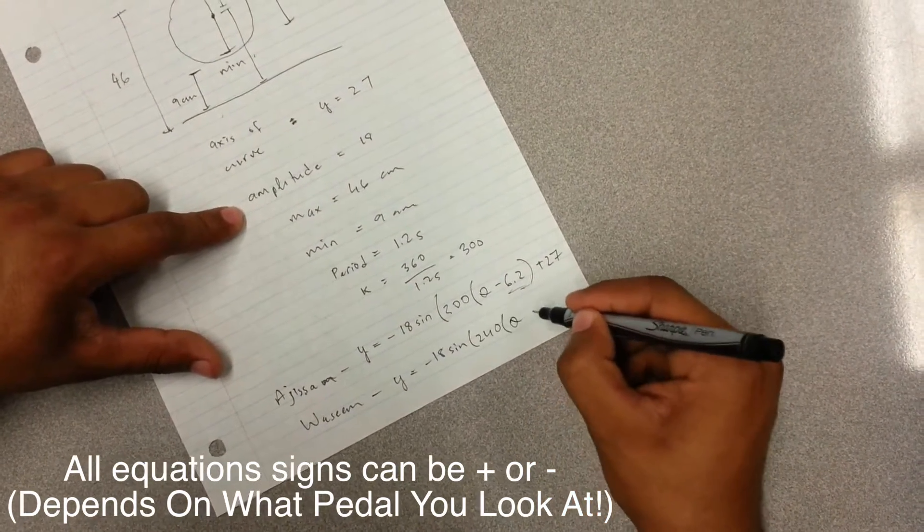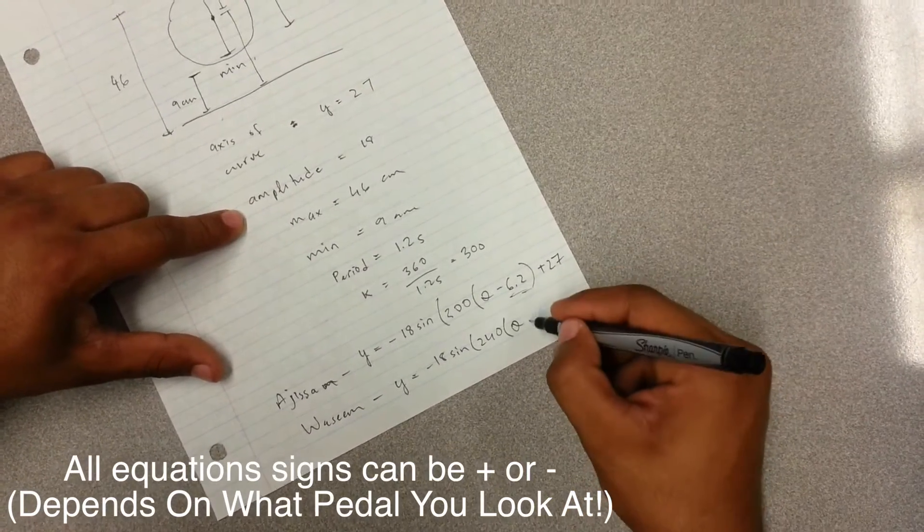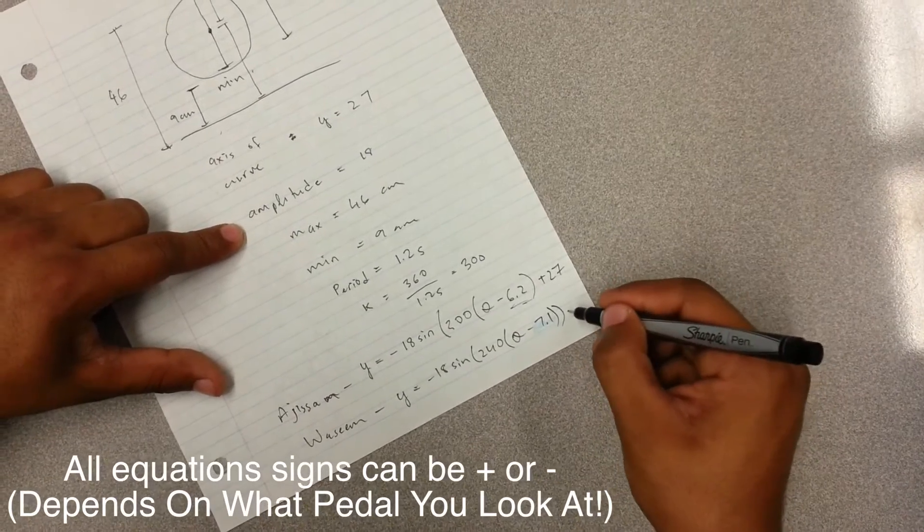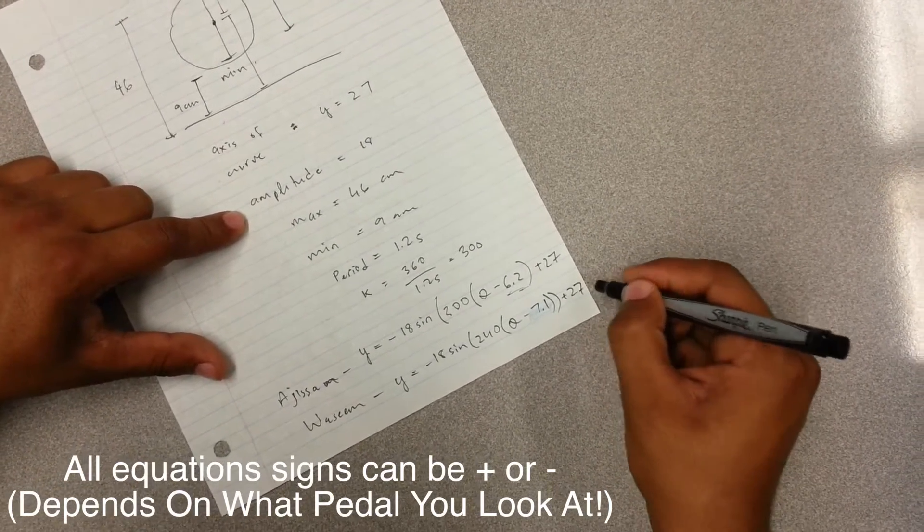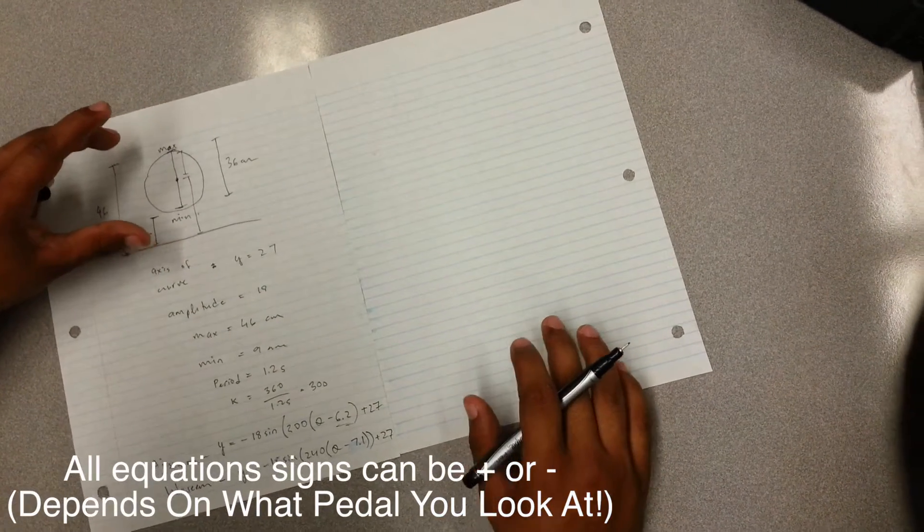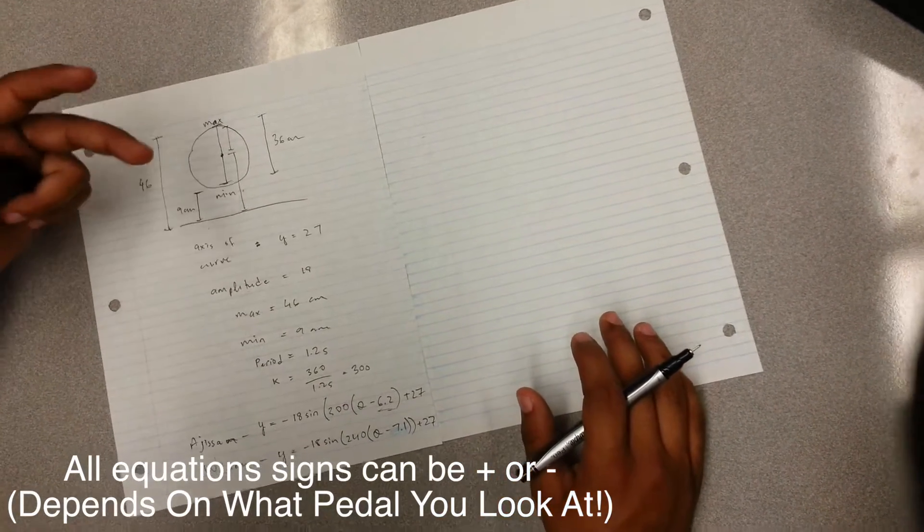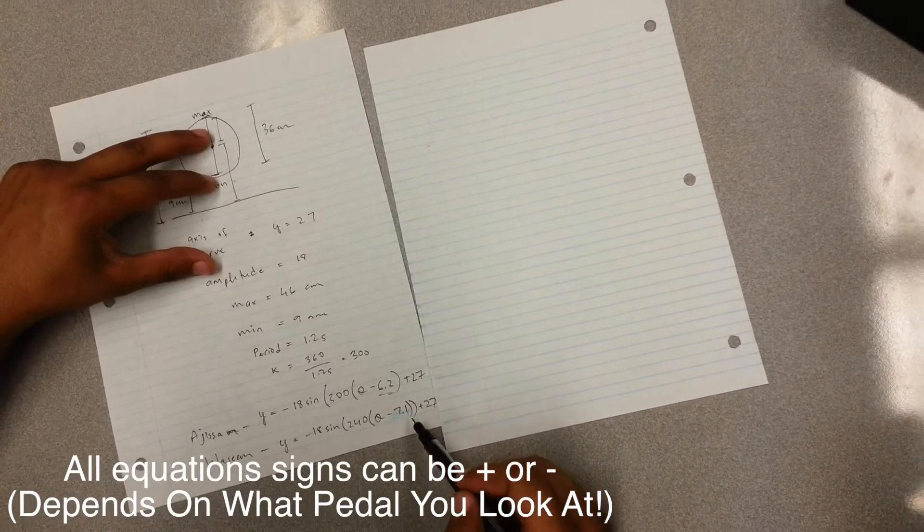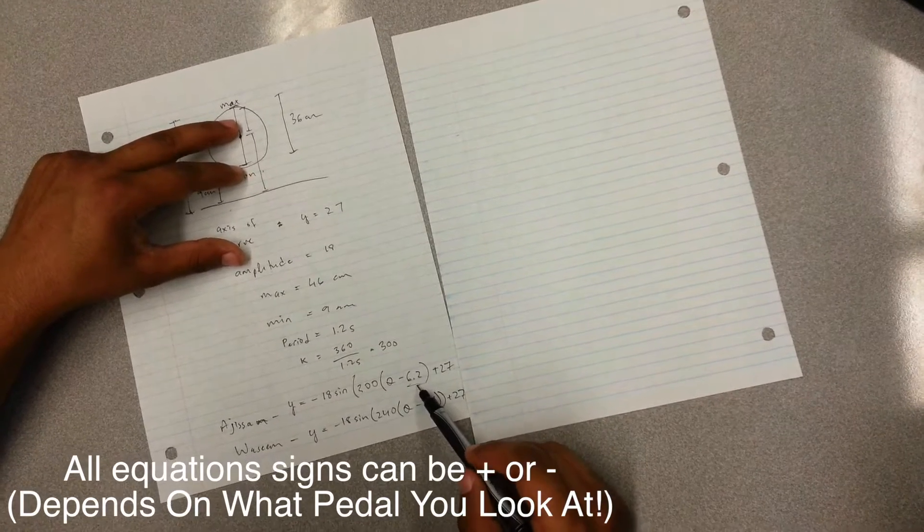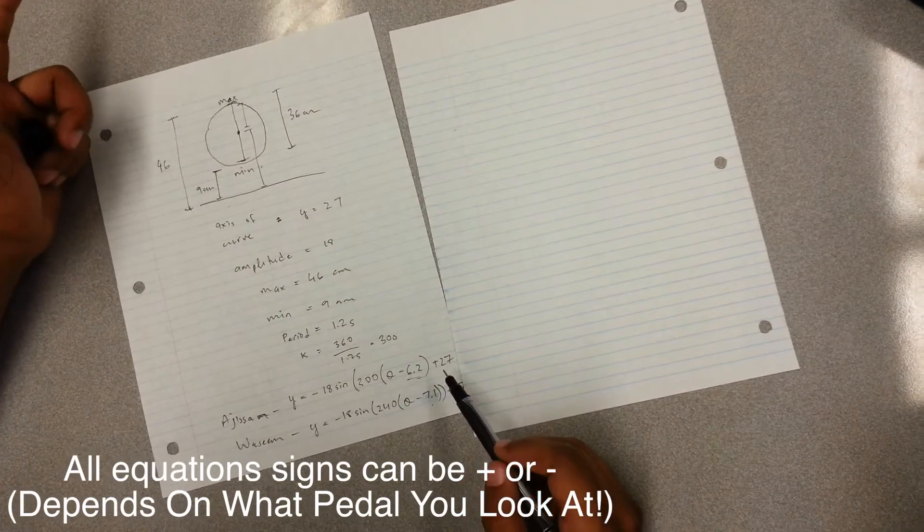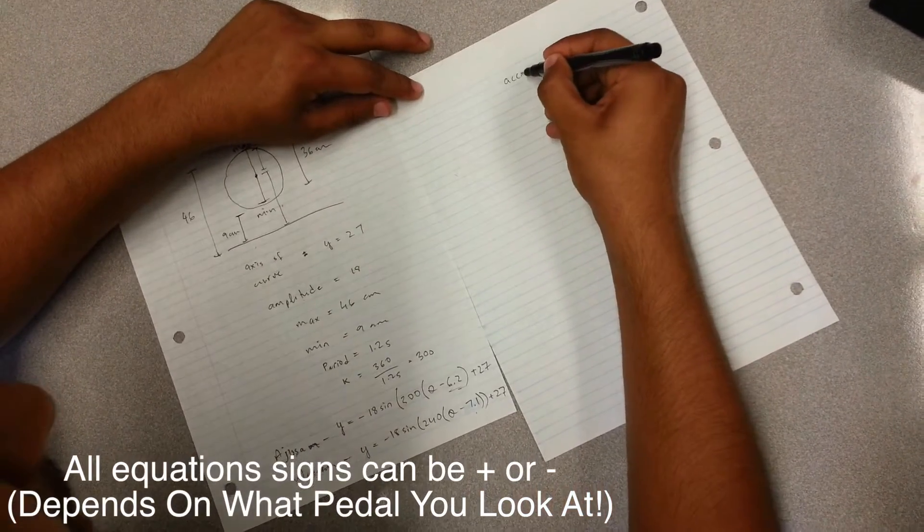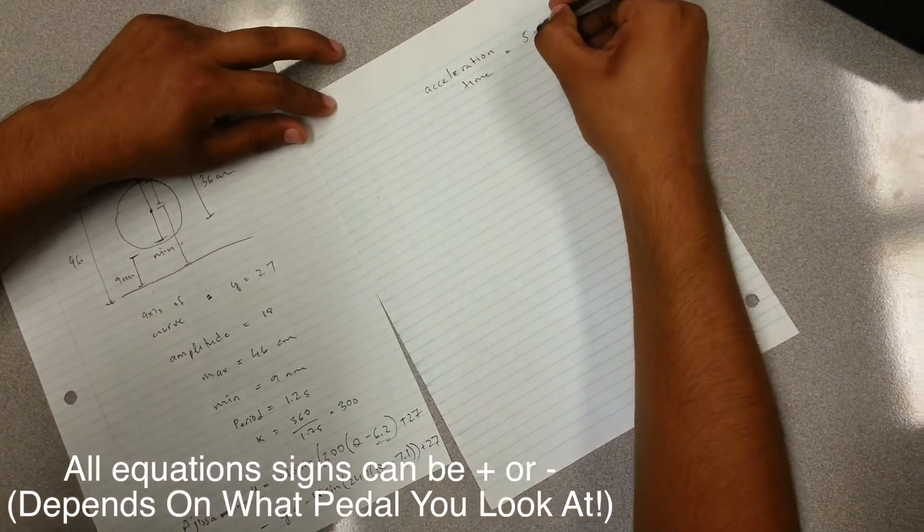And theta, I took 7.1 seconds to become consistent. And the axis of curve would be also the same. All right. So if I want to beat him in the race, I have to pedal faster than him. And I have to take less acceleration time. So if he accelerates, he only takes 6.2 seconds to accelerate. I have to take like 5.9 seconds to accelerate. So my acceleration time is about 5.9 seconds.